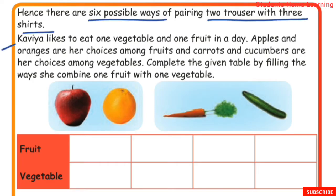Caviar likes to eat 1 vegetable and 1 fruit each day. Apples and oranges are her choices among fruits, and carrots and cucumbers are her choices among vegetables.